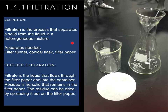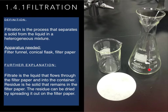In a heterogeneous mixture such as sand and water, you can separate the sand from the water by using a filter paper placed inside the funnel. This is the conical flask, this is the filter paper, and this is the beaker. The filtrate is the liquid that flows through the filter paper into the conical flask, and the residue is the solid that remains in the filter paper, which can be dried by spreading it out after the experiment.